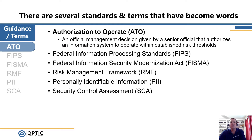Starting with the guidance and term acronyms in alphabetical order, we have Authorization to Operate, or ATO. An ATO is typically a memorandum that defines or gives an organization authority to operate their system. An ATO will define any parameters for that operation — for example, if it's a pilot system it may only operate for six months, or if it's an operational system intended for long-term use, that will be documented in the ATO as well.